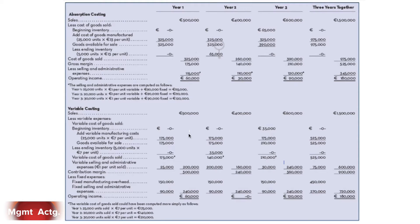Now let's jump down to variable costing. Notice it's not identical because this is in a contribution format and this is in standard format. But we end with $60,000 in operating income under both conditions. As I said in part one of the chapter eight video series, if production equals sales, variable costing adds no new information — it doesn't help us make any better decisions because we add no new information.